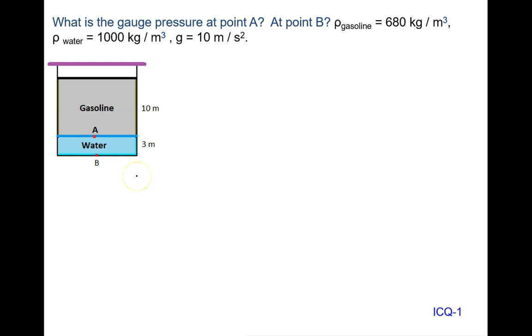If you have absolute pressure, then you have to add atmospheric pressure. So pressure at point A is written as h rho into g. What is the height? That is 10 meters.